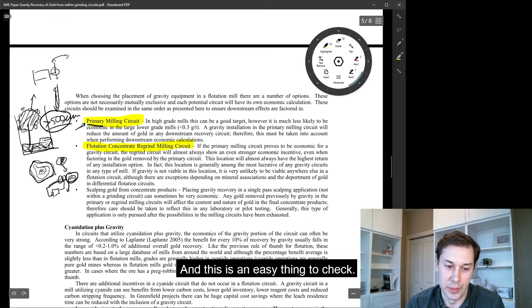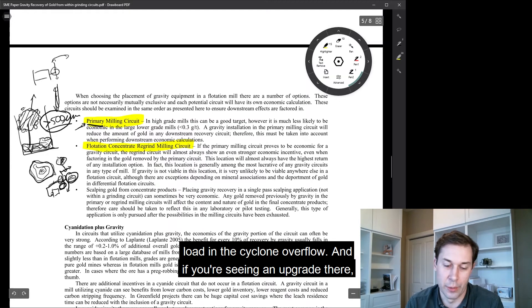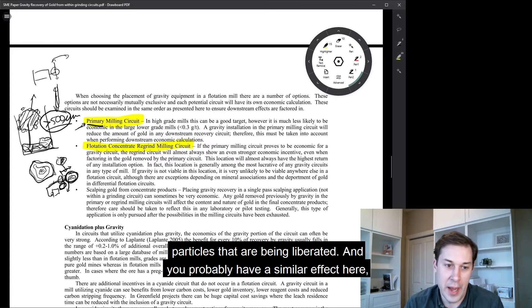And this is an easy thing to check. You're just looking at the gold grade differential between the recirculating load and the cyclone overflow. And if you're seeing an upgrade there, then it does mean that there's a good opportunity to recover these free gold particles that are being liberated.